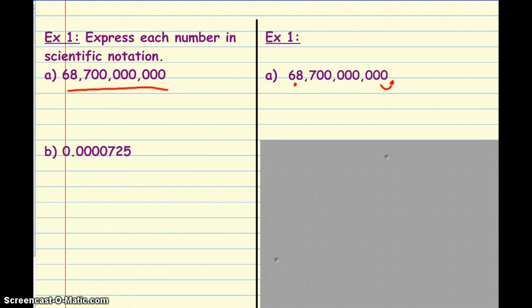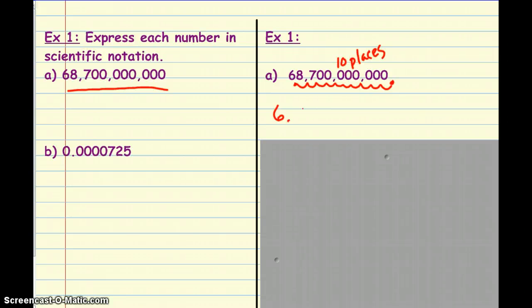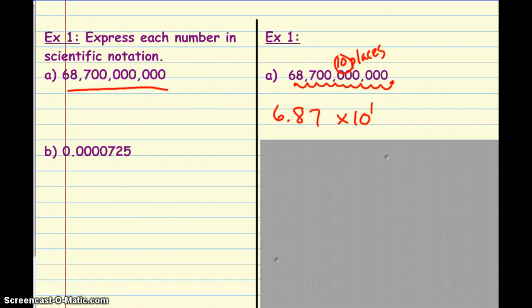We're going to make little loops — one through ten. We moved that decimal ten places. So we have to rewrite this number as 6.87 — my first number, bigger than one and less than ten — times ten to a power. The power is the number of places we moved the decimal, which is ten. And because we moved that decimal to the left, we call this a positive ten. So 68,700,000 is the same as 6.87 times ten to the tenth power in scientific notation.